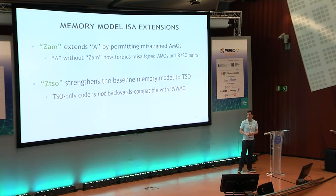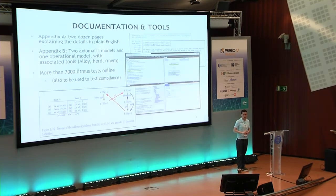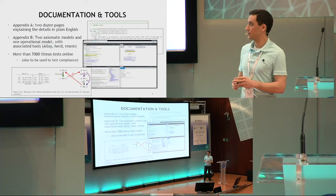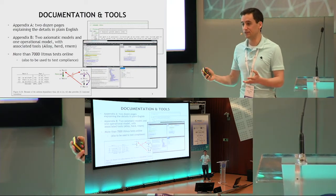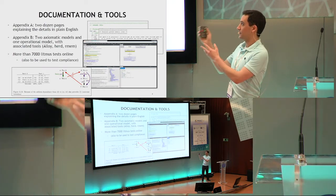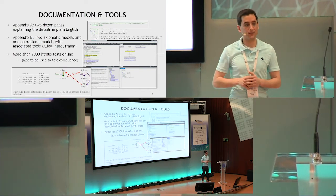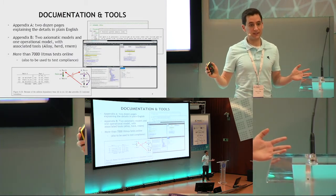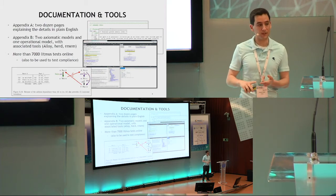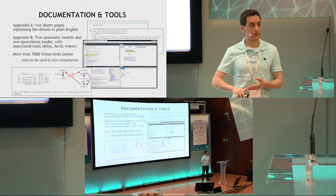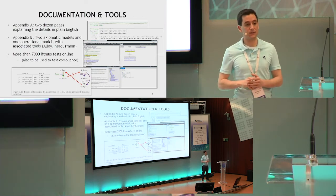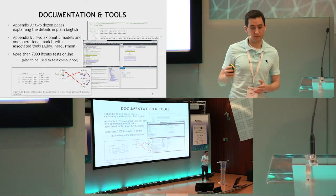This also means that the A extension without ZAM does not support misaligned AMOs or LR/SC pairs. As I mentioned, we have these appendices, and they also link to a bunch of online resources where we have more than 7,000 litmus tests — the standard tool for testing memory models. We have online tools including the operational model framework from the University of Cambridge, a herd formalization, an alloy formalization, and all kinds of resources to help people understand what's going on and apply it to testing and making sure your hardware is compliant. We're going to work with the compliance testing group to port these litmus tests into the compliance testing framework.